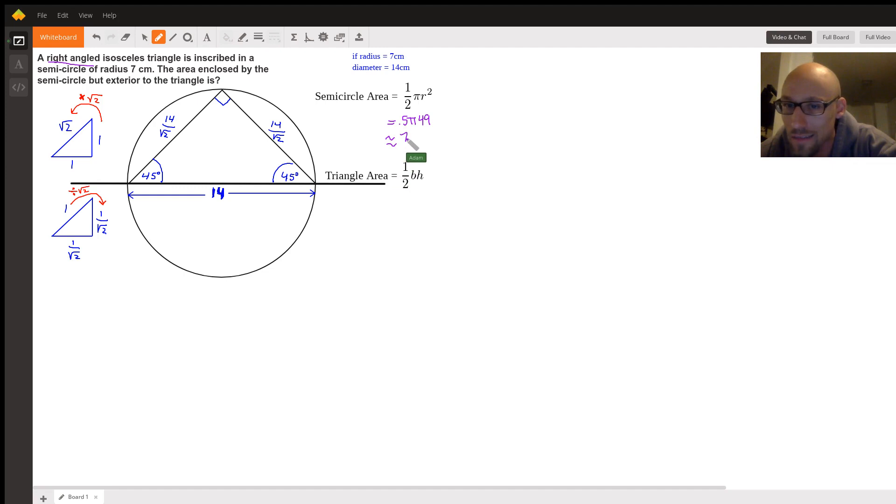And the triangle area: half base times height. So we'll call this a base and this a height. Half base times height. This is why I didn't worry about rationalizing my denominators, because I know that √2 times √2 is just going to be 2. So 14 over 2 is 7, 14 over this 2 is 7. 7 times 7 is going to be 49. 49 square centimeters.